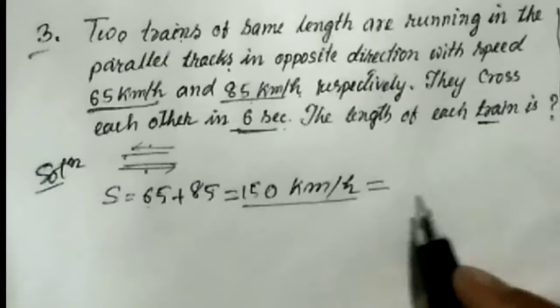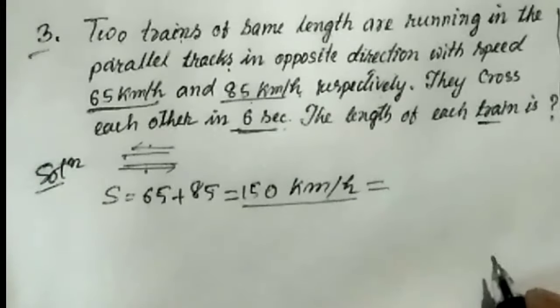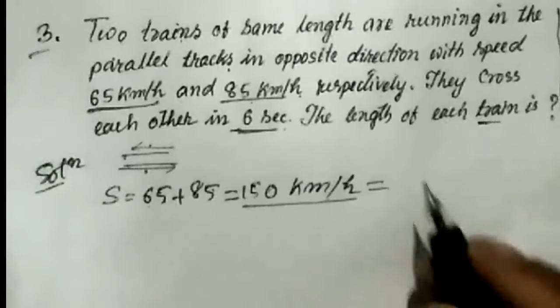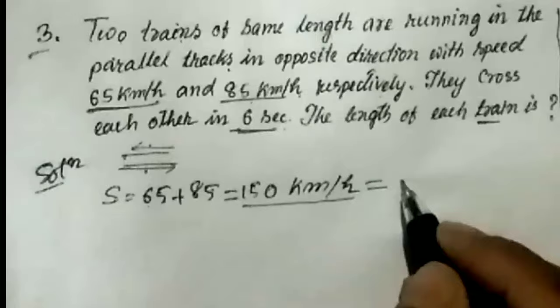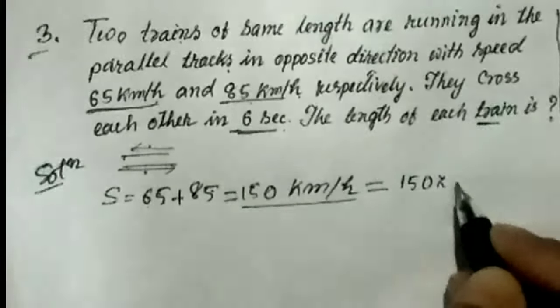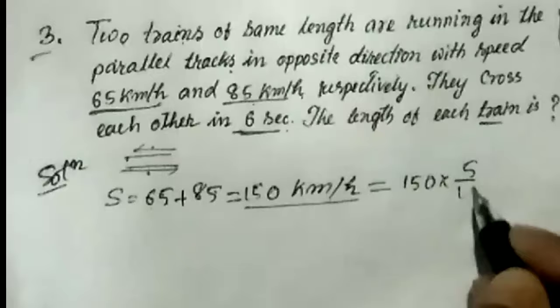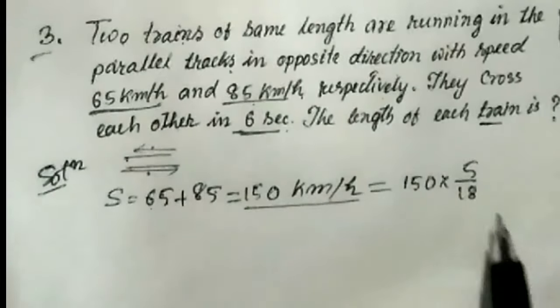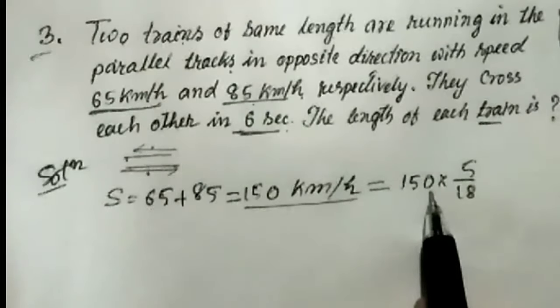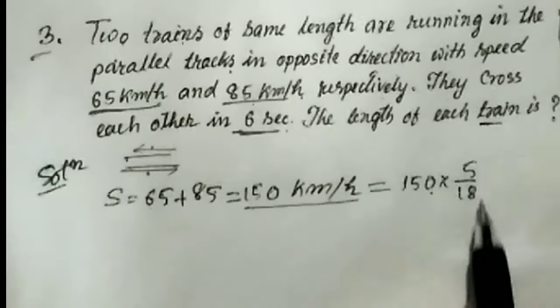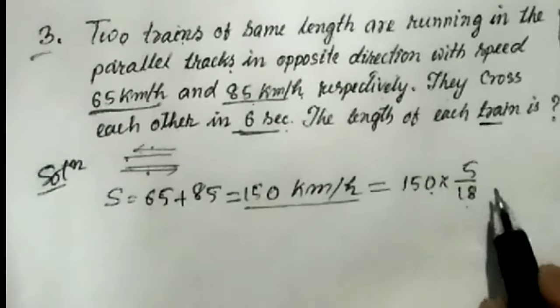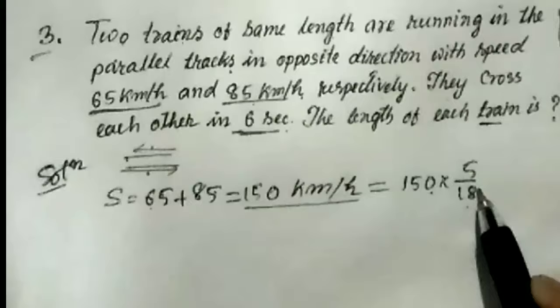So 65 plus 85 equals 150 km per hour. To convert to meter per second, multiply by 5 over 18. So 150 km per hour times 5 over 18 gives us 125 over 3 meter per second.